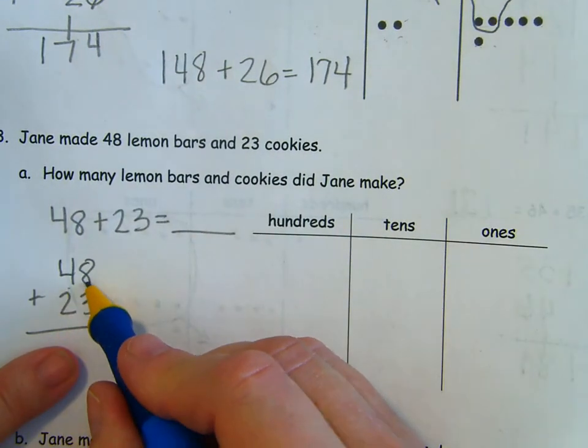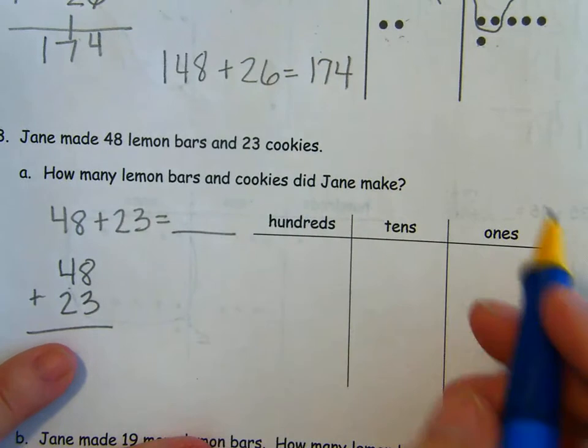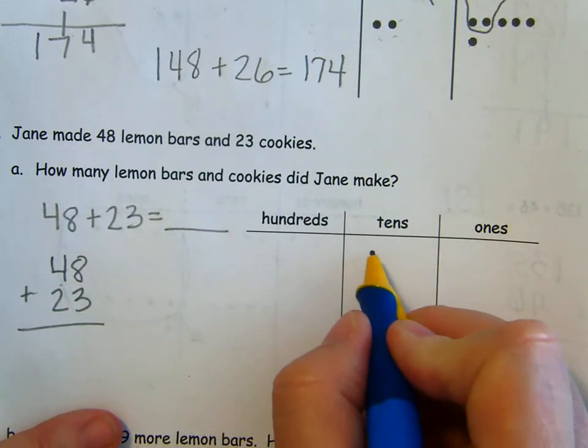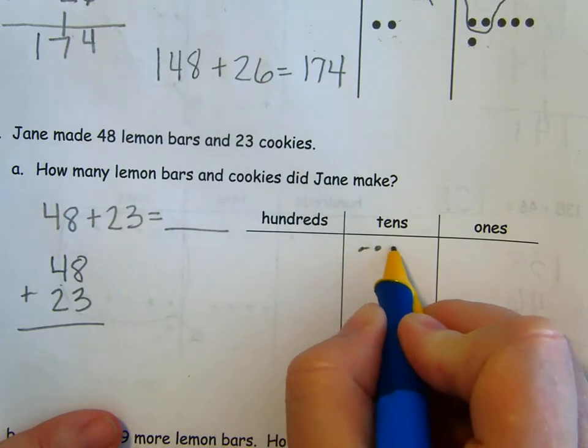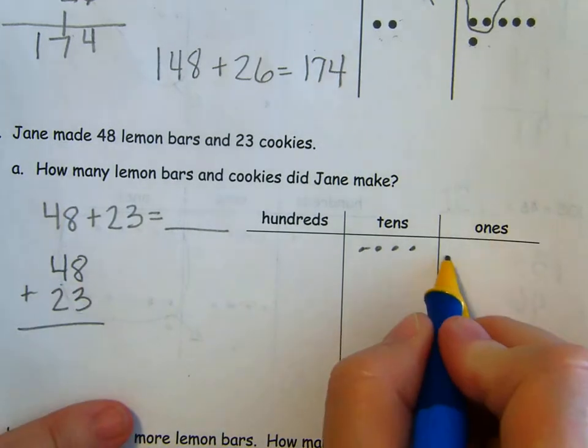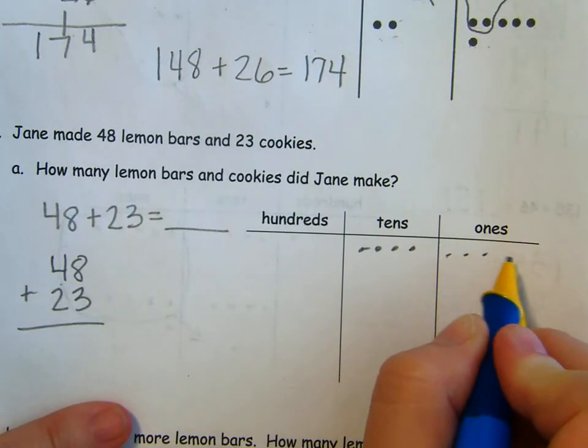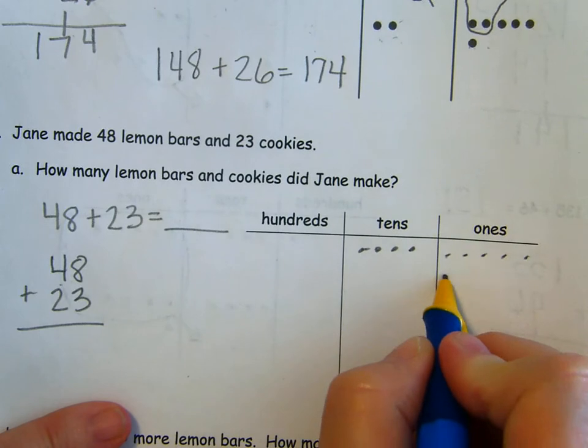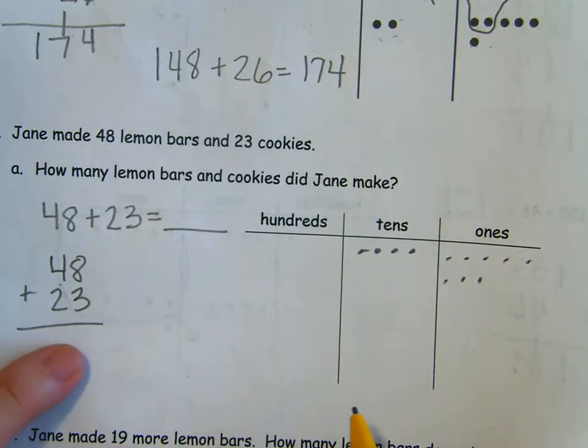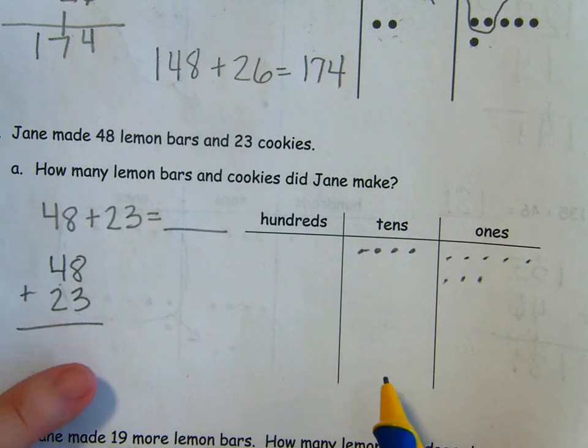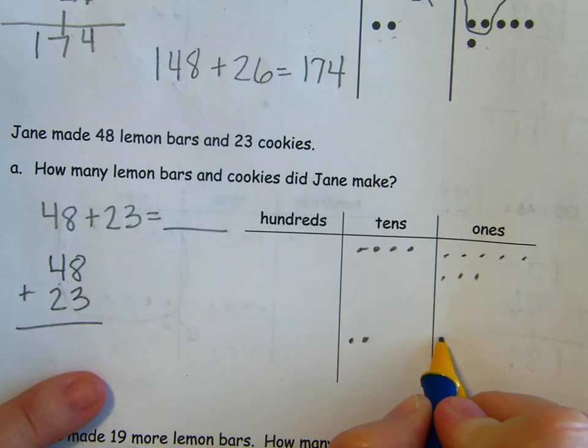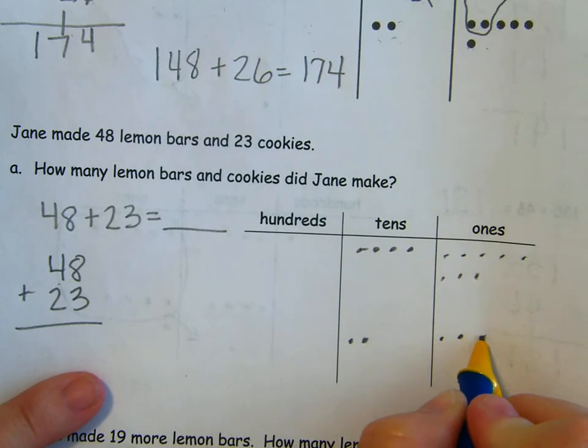Everything is lined up and I'm going to represent with chips. Four tens and eight ones. There's no hundreds here. Four tens and eight ones. So I have 10, 20, 30, 40, 41, 42, 43, 44, 45, 46, 47, 48. Now I'm going to add 23. 10, 20, 21, 22, 23. Excellent.